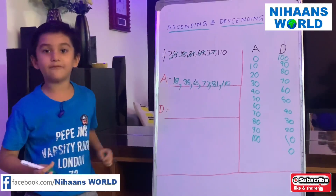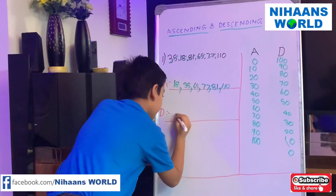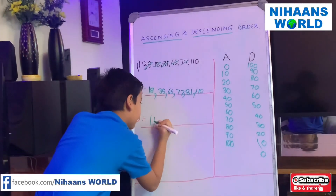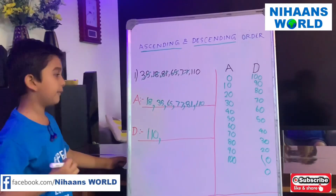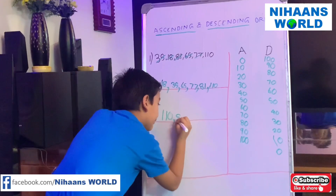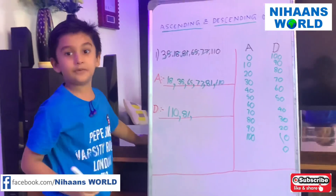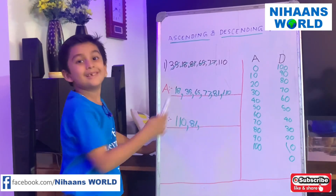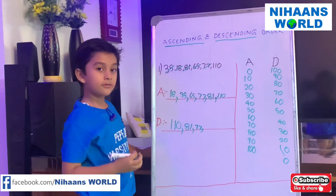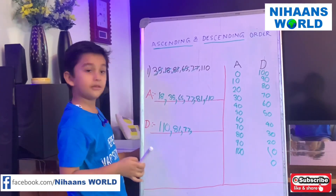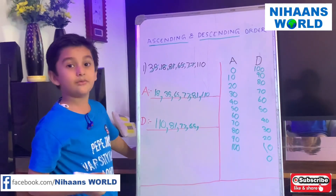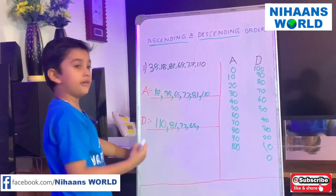In the same way, we will write descending order. So first, what is in the last? We write 110 here, and make a comma. Then 81 will come, so we write 81 here. After 81, we have 77, so we write 77. Next we count 65 because it is in the third place. Then we count 35 as it is in the second place.